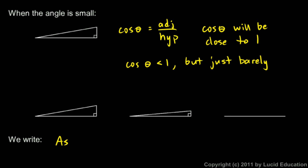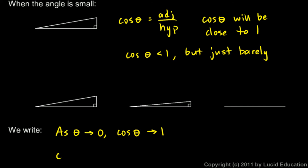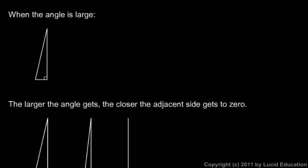In the degenerate case, the adjacent side and the hypotenuse are exactly the same, so we can say that as theta approaches 0, the cosine of theta approaches 1. And when theta is equal to exactly 0 degrees, those sides are the same and we have 1 over 1, so the cosine of 0 degrees is exactly 1.